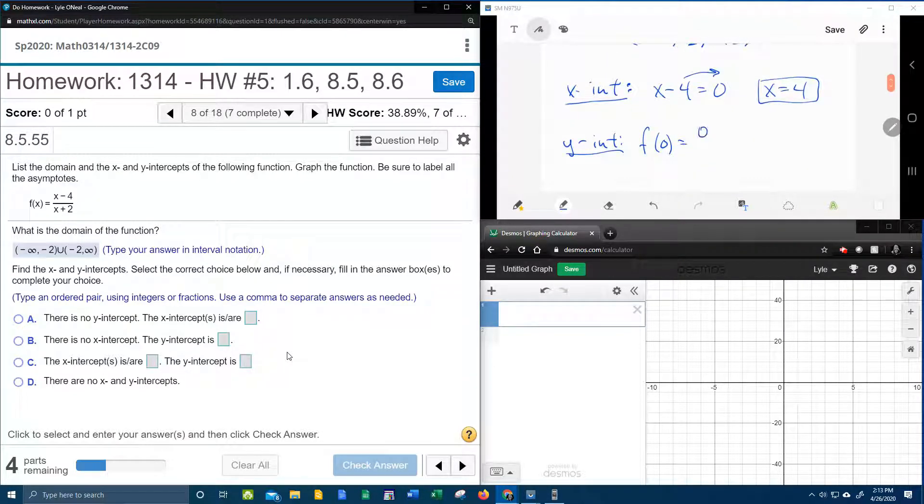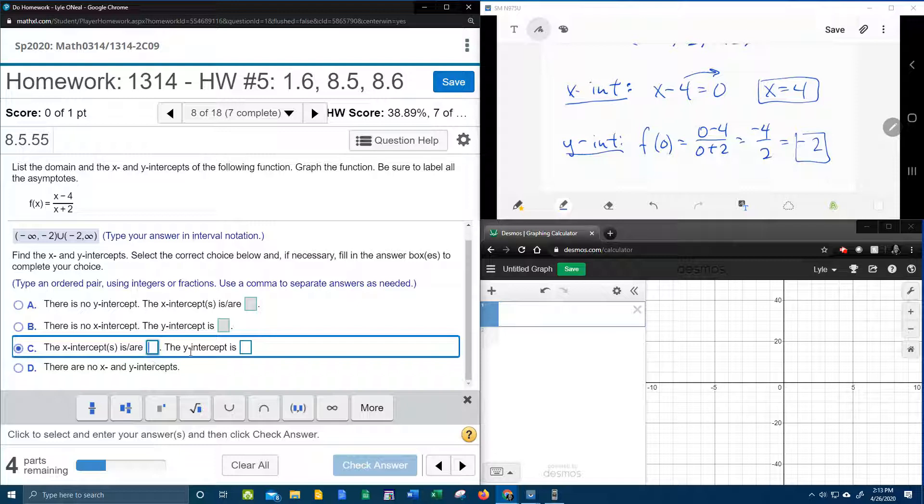So that'll be 0 minus 4 over 0 plus 2, which is going to be negative 4 over 2, which divides to make negative 2. So our x intercepts, right here, I think that's going to be answer choice C, because there is an x and a y intercept.